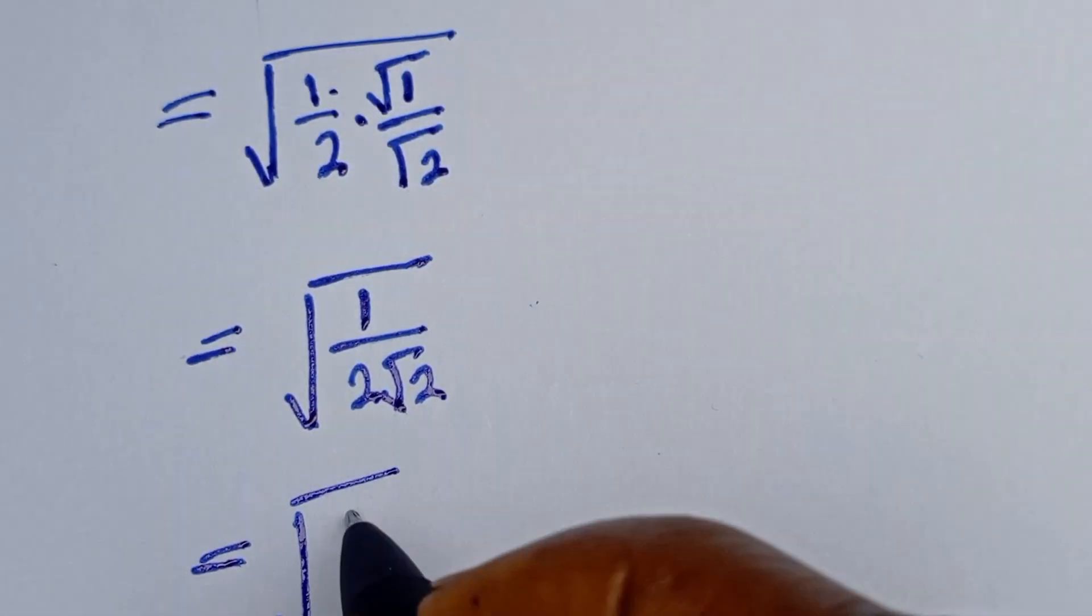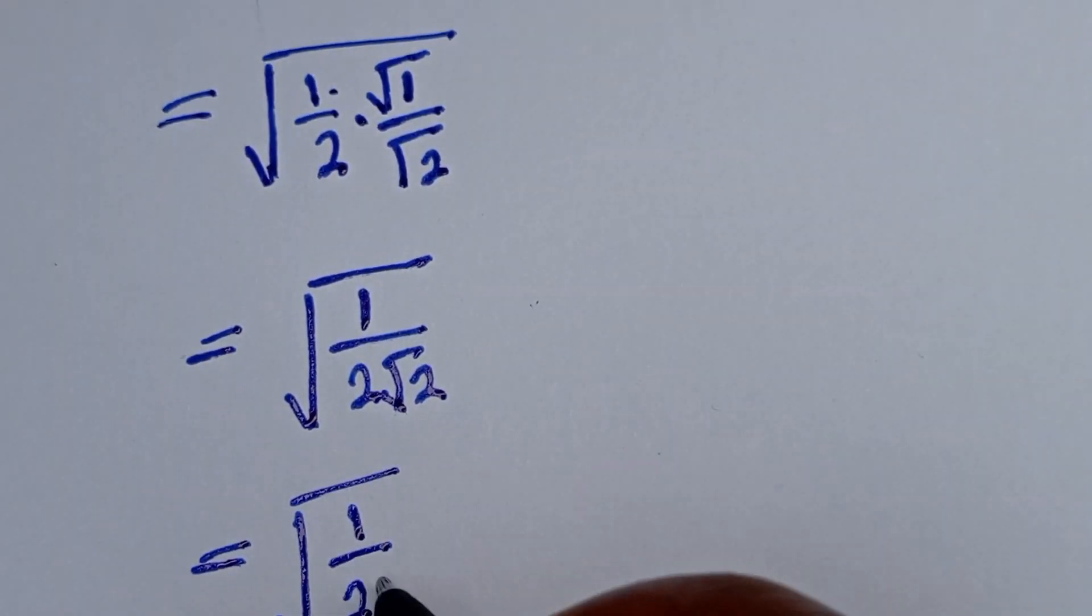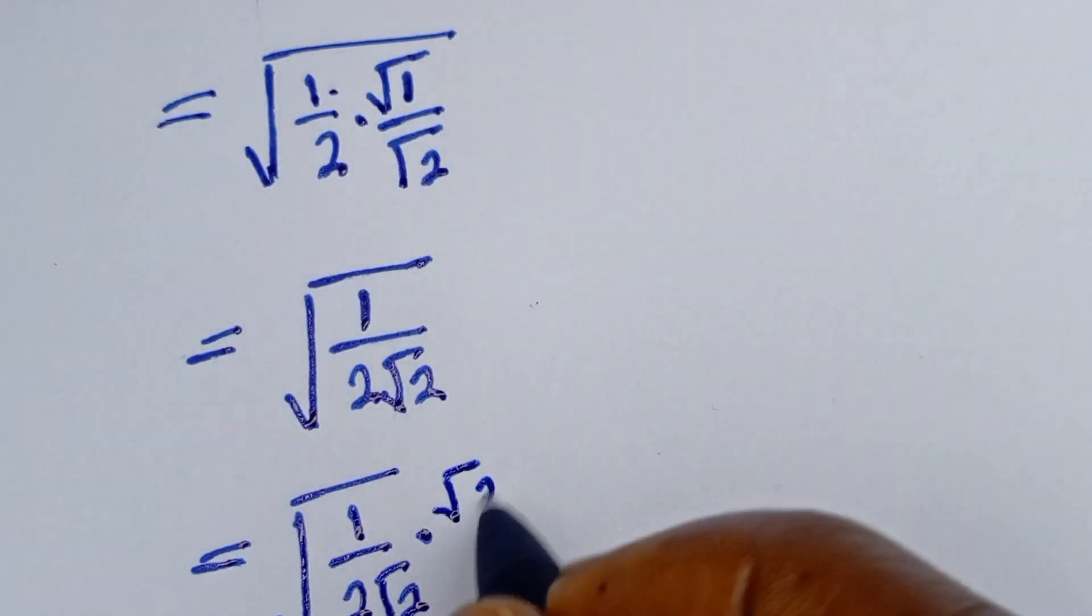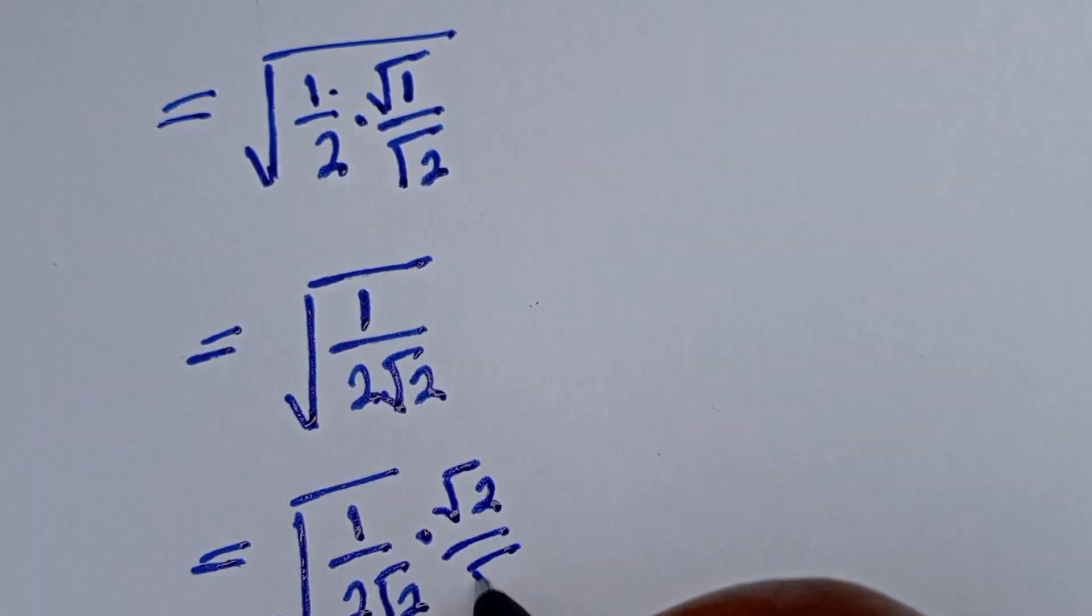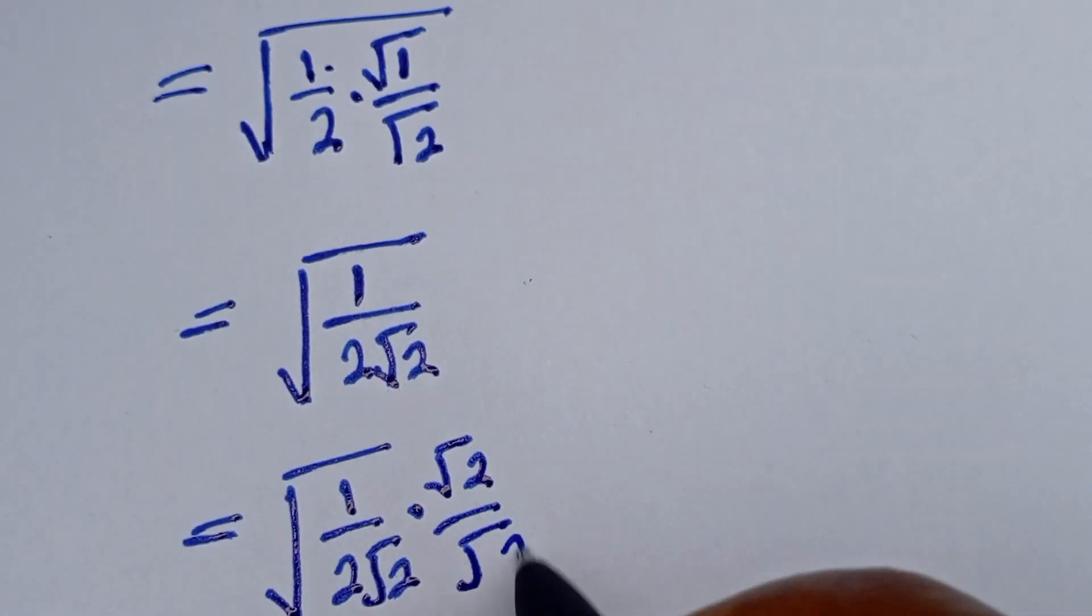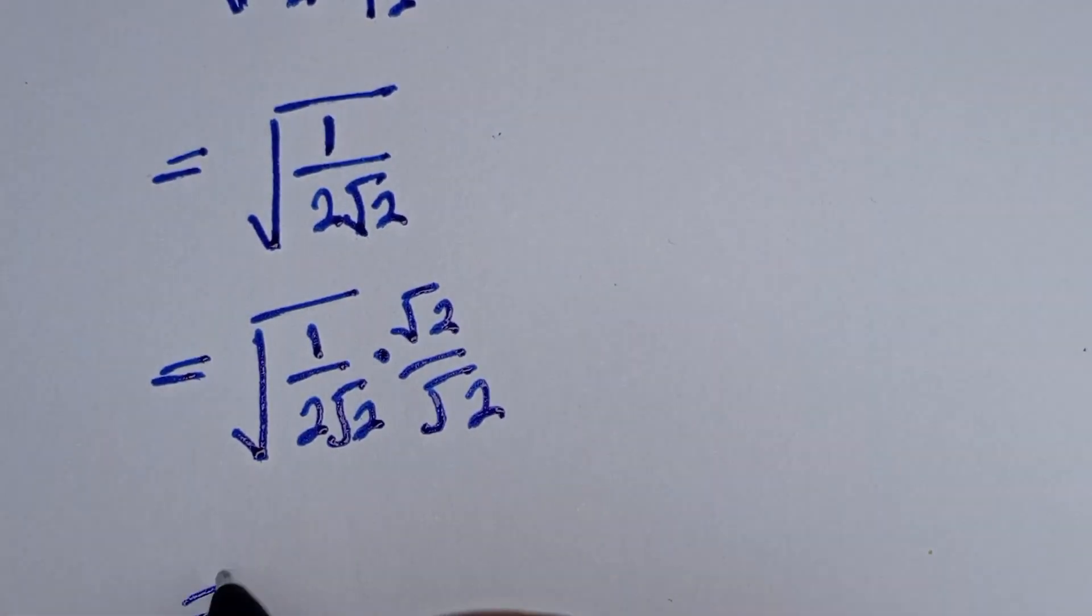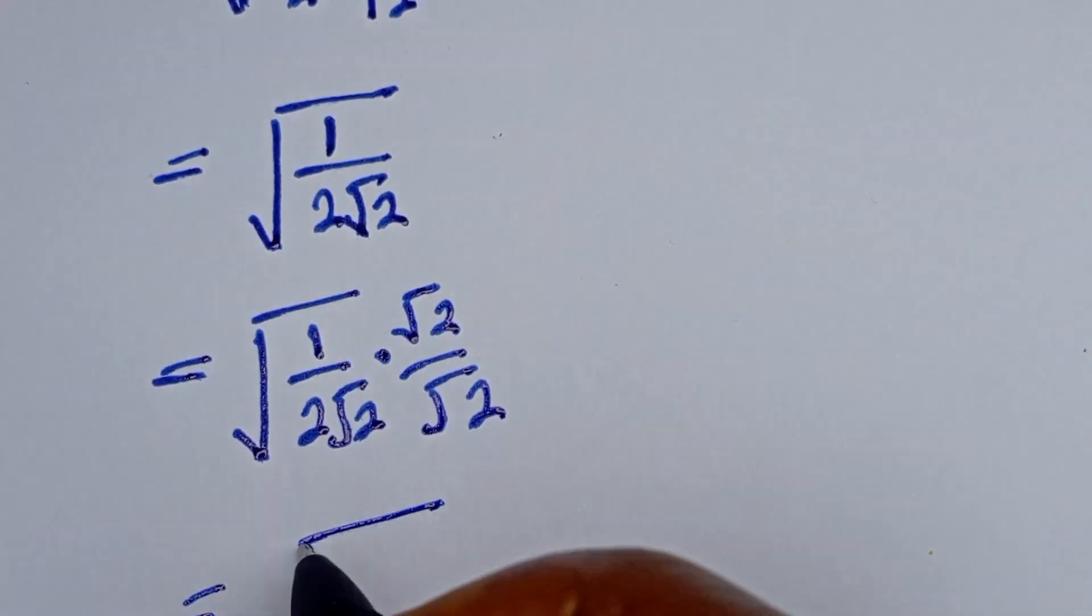1 over 2 root 2, multiplied by root 2 divided by root 2. And this is equal to the square root of